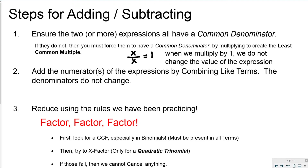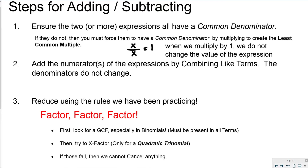Once you have common denominators, add the expressions by combining like terms on the top — don't change the denominators — and then reduce. Factor as much as possible. The first thing to look for is any GCFs. Hunt for greatest common factors, especially in binomial expressions. For example, 2x minus 6 has a 2 in front that gives away you need to factor a GCF out. But an expression like x plus 3 with no coefficient in front of x probably doesn't need GCF factoring.